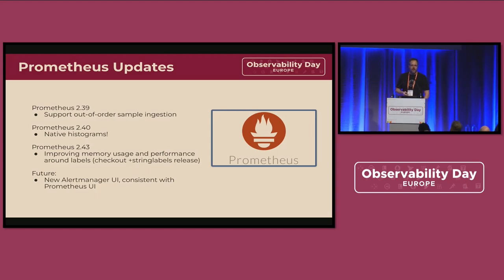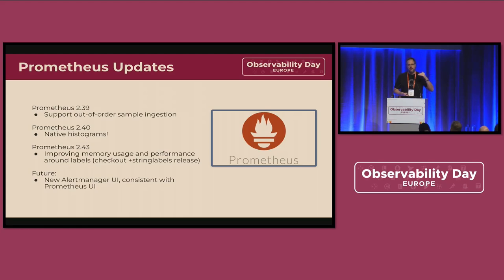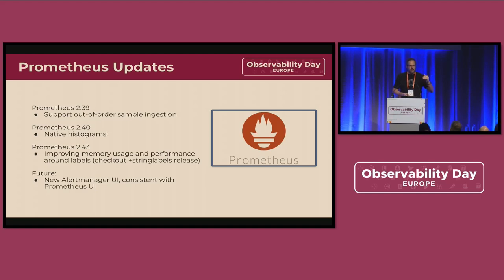If you don't know what native histograms are — historically in Prometheus, and by extension Kubernetes and everything, you had fixed buckets for your histograms where you had to predetermine what levels your buckets were sitting at,